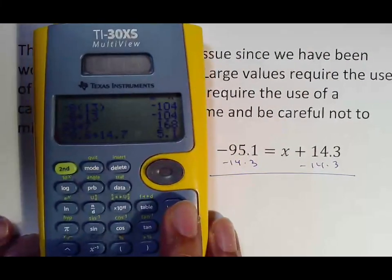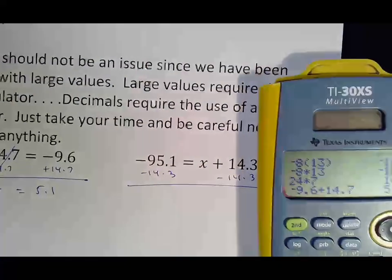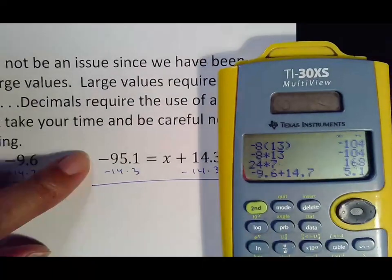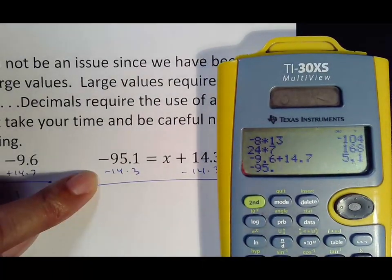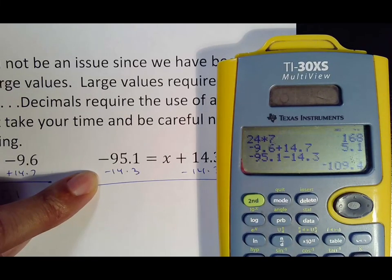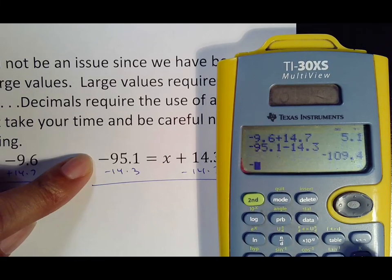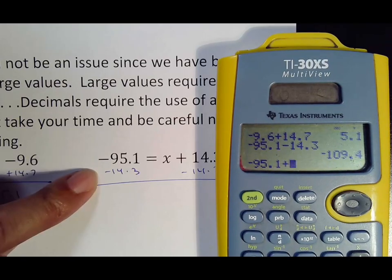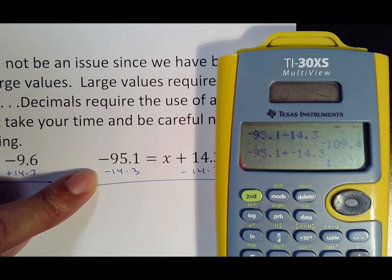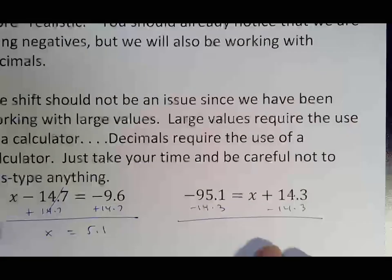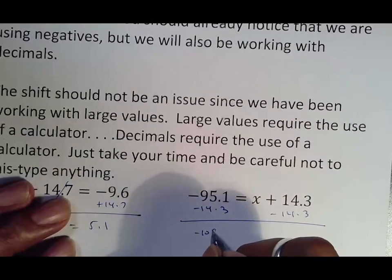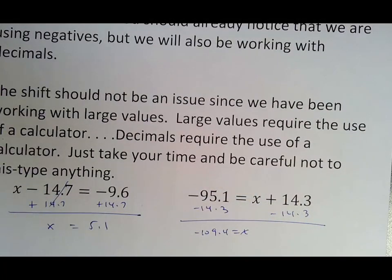There's two ways to type this in. You could put negative 95.1 minus 14.3. Or you could do negative 95.1 plus negative 14.3. Whatever way works best for you. Just make sure you practice. Either way, you get negative 109.4 for your answer of X.